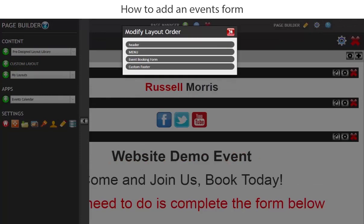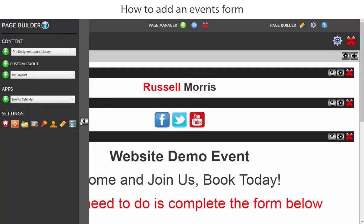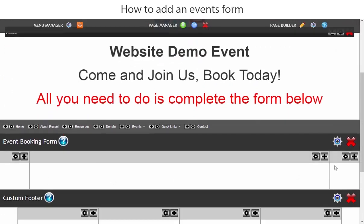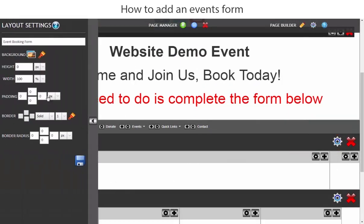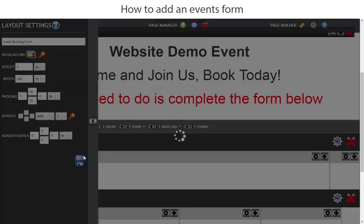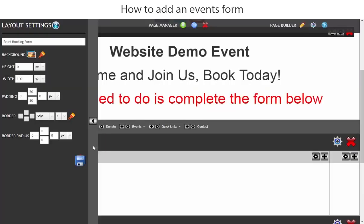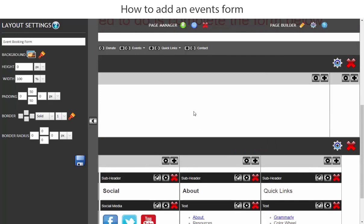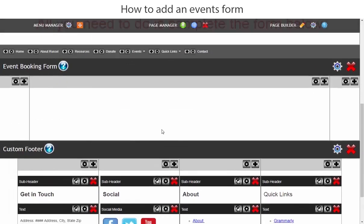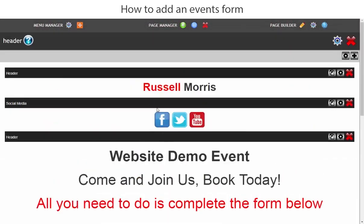Let's add that row and change its position above the custom footer. We'll close this out — that is ready for the booking form. Let's add some spacing and make that 50. 50 is a very good spacing for top and bottom across the whole website. We are now complete with the event booking page until we've actually created the event booking form.